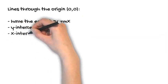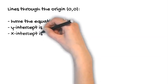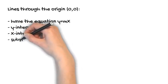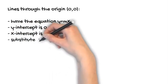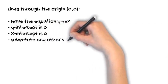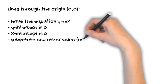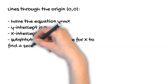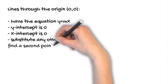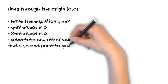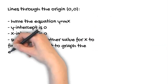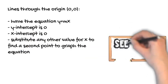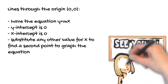For these lines that run through the origin, both their y and x-intercept is zero because they run through the origin. We can't graph these lines straight from just knowing the equation. We need to substitute another value for x to find a second point. You might sub in x equals 1, x equals 2, or x equals 10, depending on how big your Cartesian plane is.